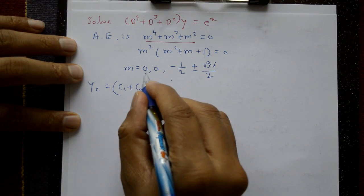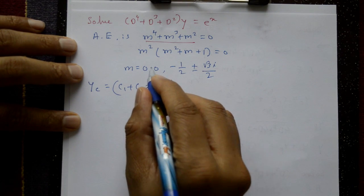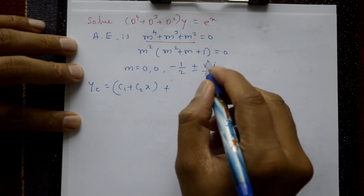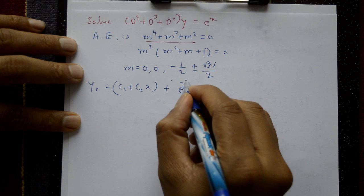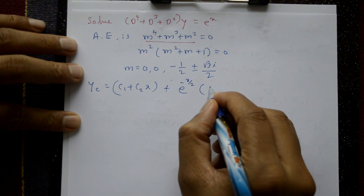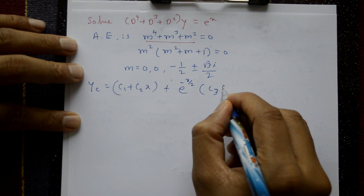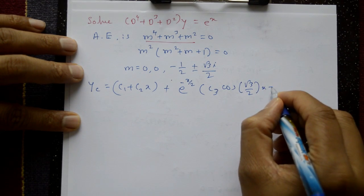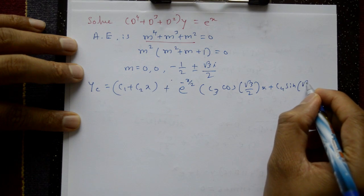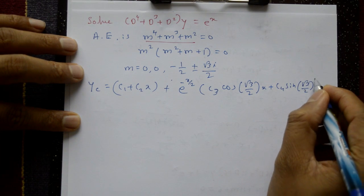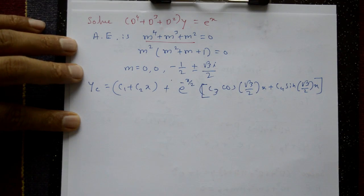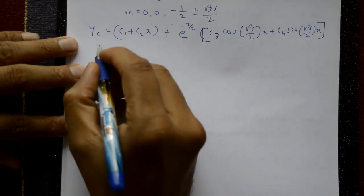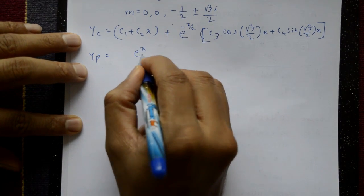The complementary function: for the two repeated zero roots, we get (c₁ + c₂x)e^(0·x) = c₁ + c₂x. For the complex roots with α = -1/2 and β = √3/2, the CF contribution is e^(-x/2)[c₃cos(√3x/2) + c₄sin(√3x/2)]. So CF = c₁ + c₂x + e^(-x/2)[c₃cos(√3x/2) + c₄sin(√3x/2)].